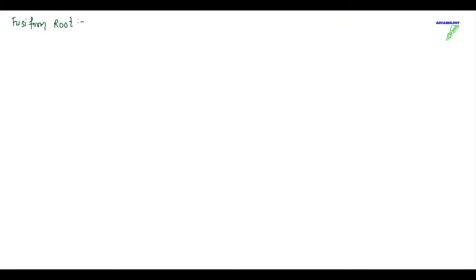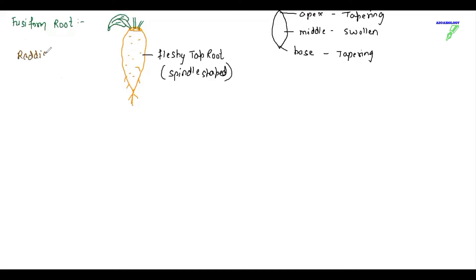Let us see all the types for food storage. First we have fusiform. When I use this word fusiform, it means it is spindle-shaped. The upper end and the lower end is fused and the middle end is swollen. So here the example that we have is radish. Radish is the fusiform root. Here they have fleshy tap root which is spindle-shaped. Spindle means upper and lower end will be tapered and the middle will be swollen. When we talk about fusiform, example is radish and the scientific name that you need to remember is Raphanus sativus.